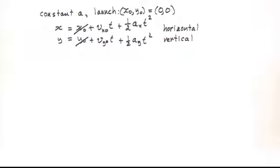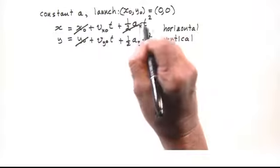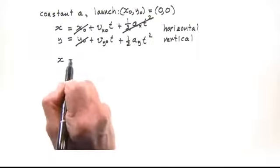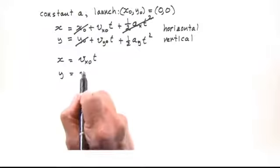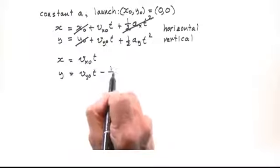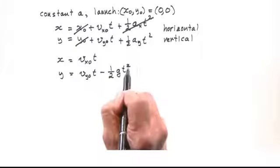For projectiles, we set Ay equals minus g, so our equations for x and y motion are x equals vx0 times t and y equals vy0 times t minus one half g t squared.